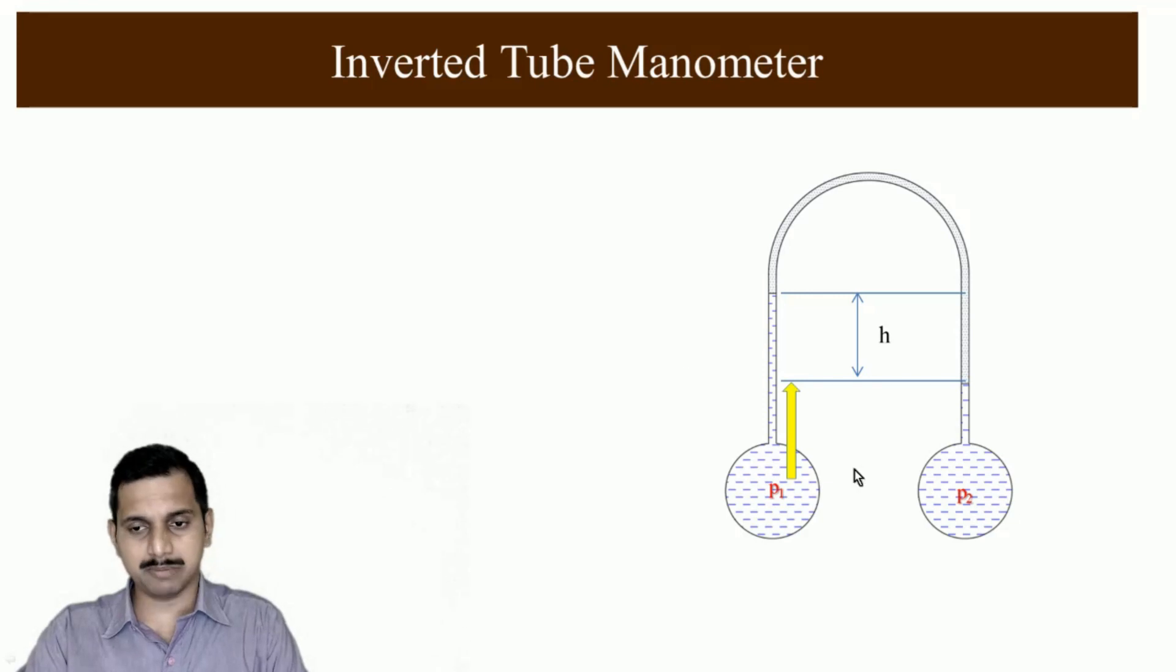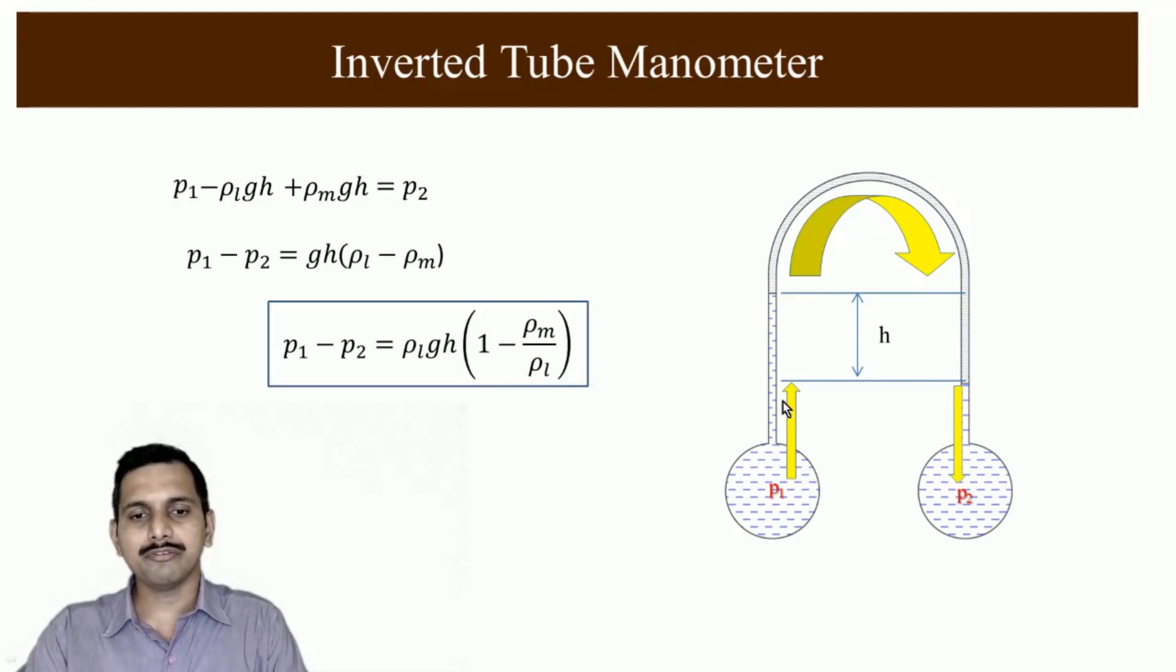Here, the difference is it is a similar way, this part and this part can be neglected because it is the same thing. You go up here, you go down here, it is the same, it gets neglected when we calculate p1 and p2. This part also we can neglect and what remains is when you go up it is minus rho g h here and rho m g h when we come down. It is reverse of U tube manometer that is equal to p2. We get this thing here. In the previous case it was rho m by rho l minus 1, here it is 1 minus rho m by rho l.